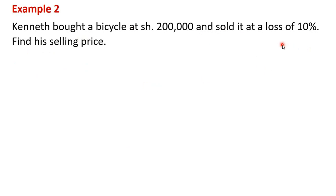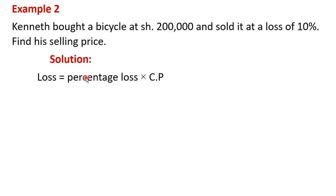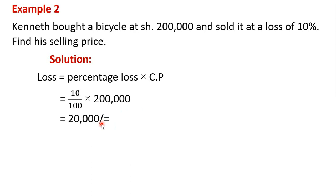This time Kenneth makes a loss. The loss is given as 10%. To calculate the loss: loss is given by the percentage loss times the cost price, which is 10 divided by 100 times 200,000 shillings. That means the loss is going to be 20,000 shillings.